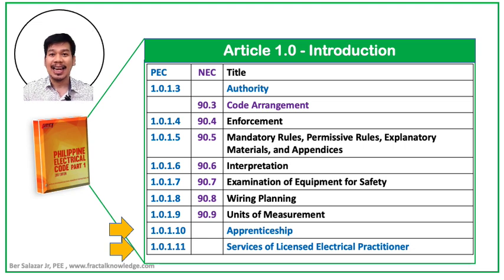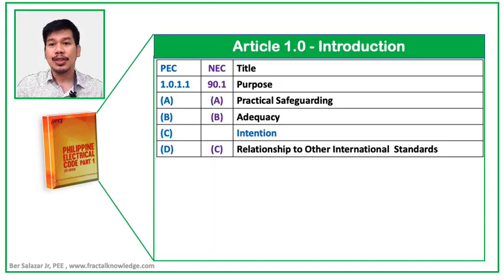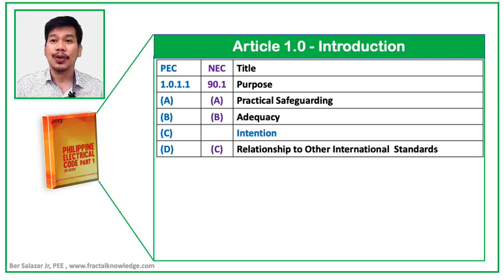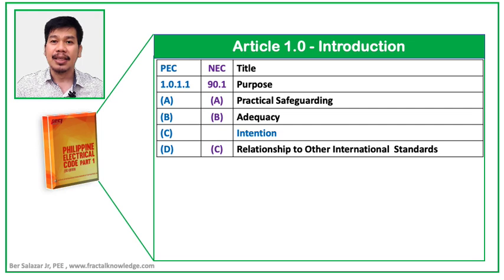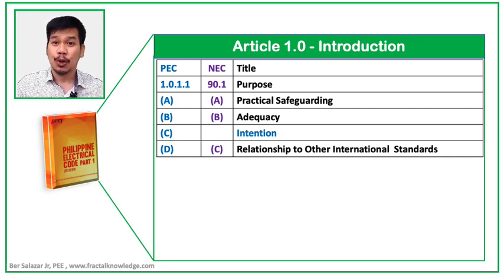It's just only the beginning. Let's start with the main purpose of PEC 2017. The first section in PEC 2017 Article 1.0 is Section 1.0.1.1, Purpose. The purpose discusses the role of the Code, which is to safeguard life and property. It discusses electrical design adequacy and its intention, and its relationship with other international standards. In PEC 2017, there was no subsection on intention — it was mentioned in Paragraph A. We will show the difference in a short while.